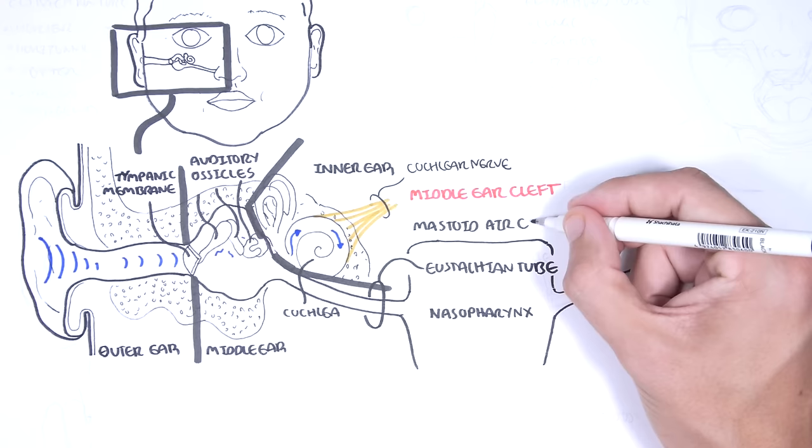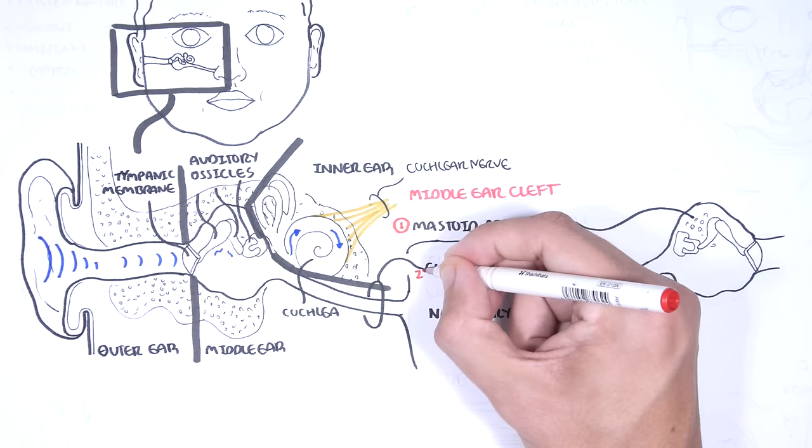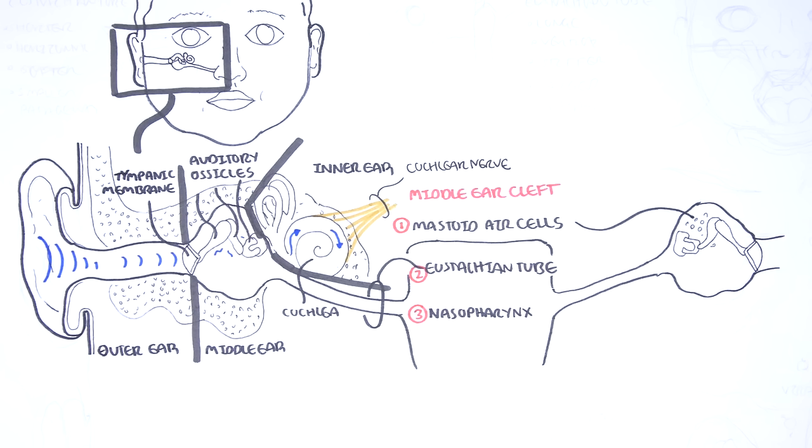The middle ear cleft is made up of the mastoid air cells posterior to the middle ear cavity, the eustachian tube, and the nasopharynx. The middle ear cleft can be thought of as a miniature lung. These areas involved allow for ventilation and pressure equalization, and any issues that occur within these areas can result in middle ear pathologies.